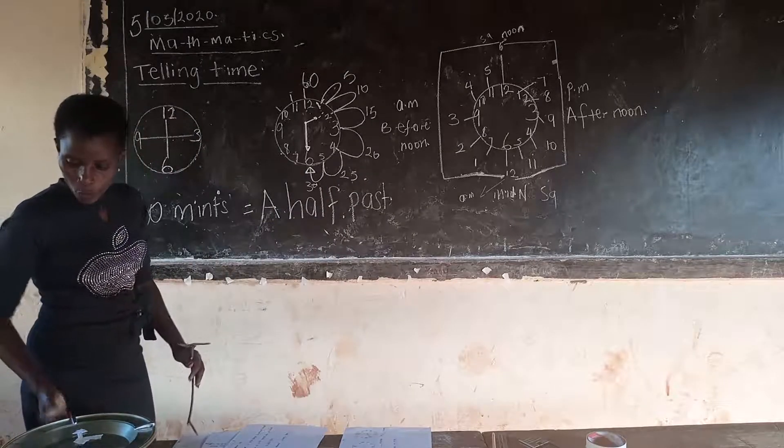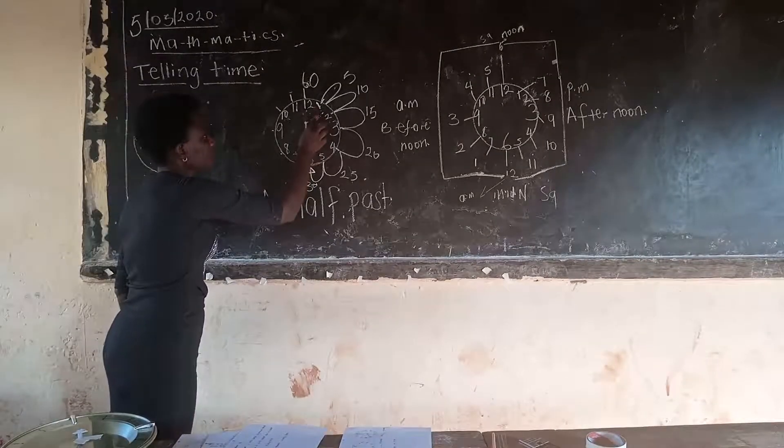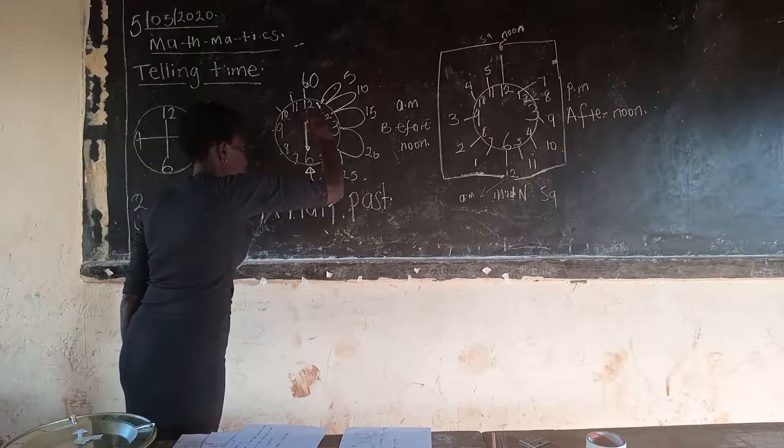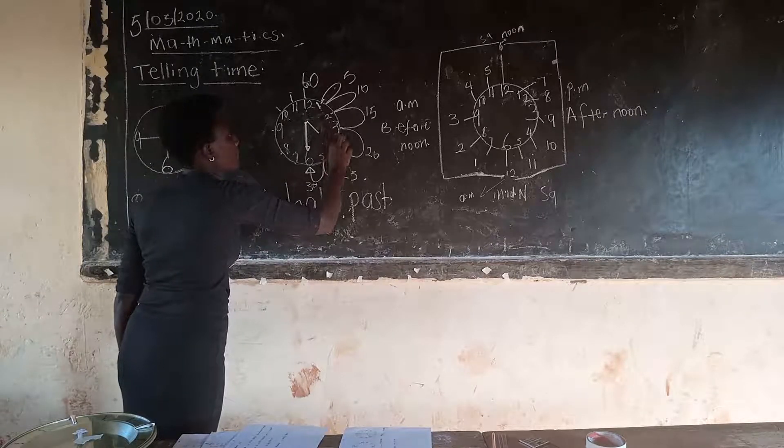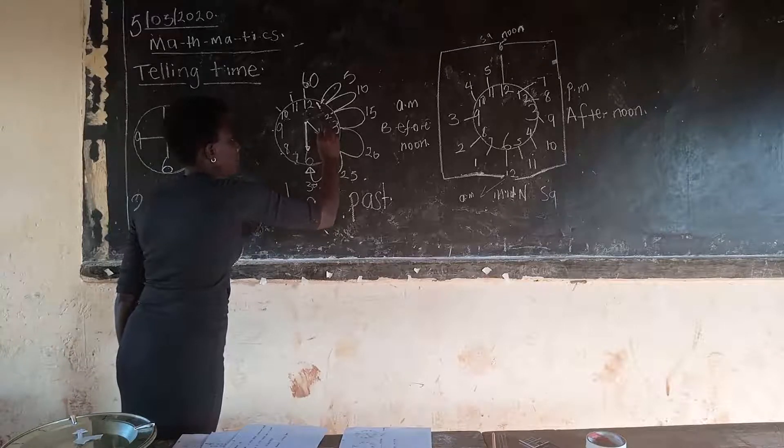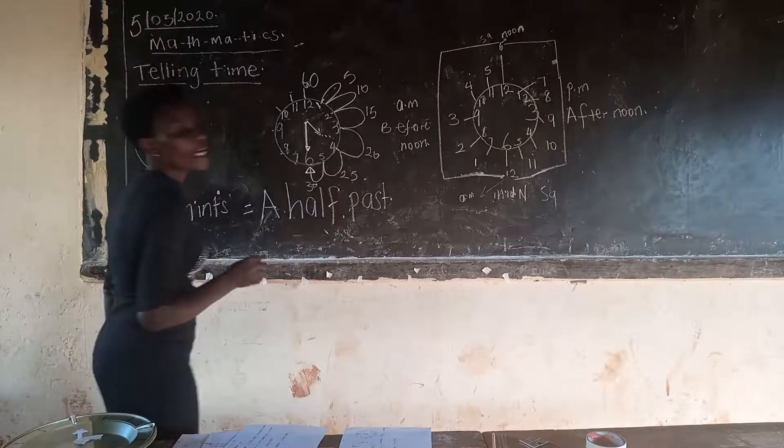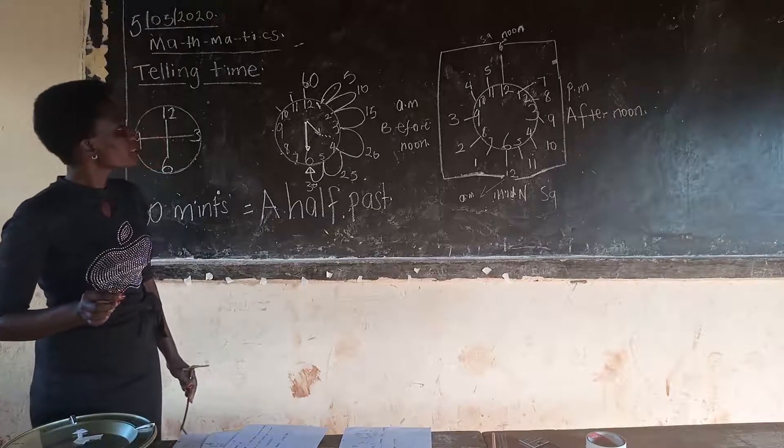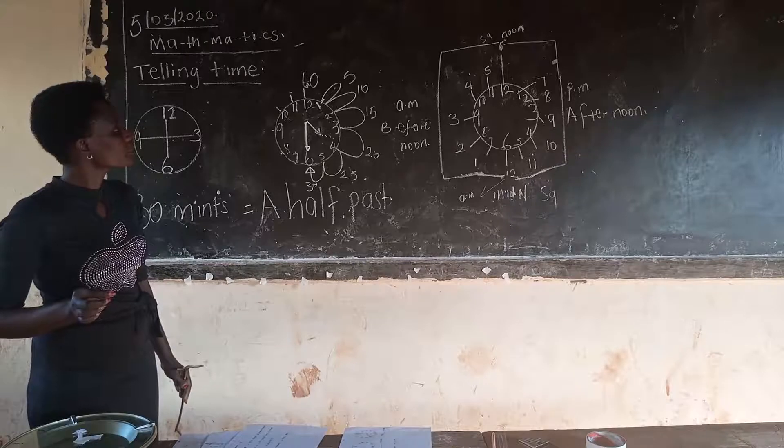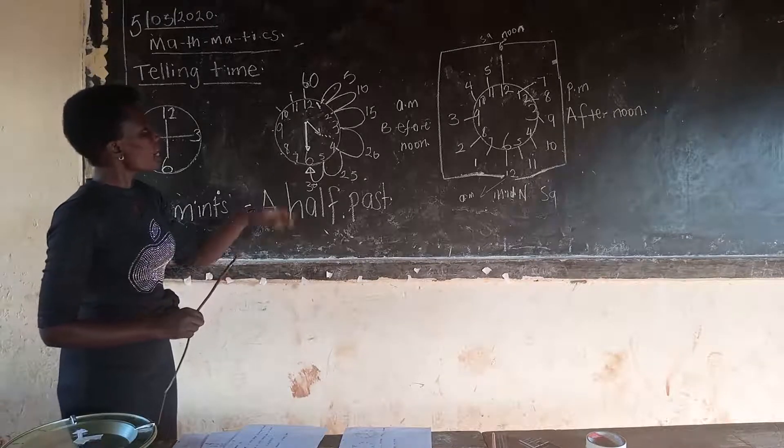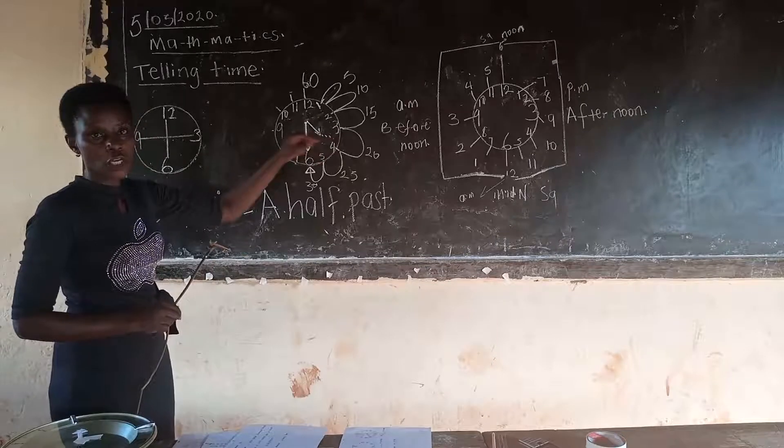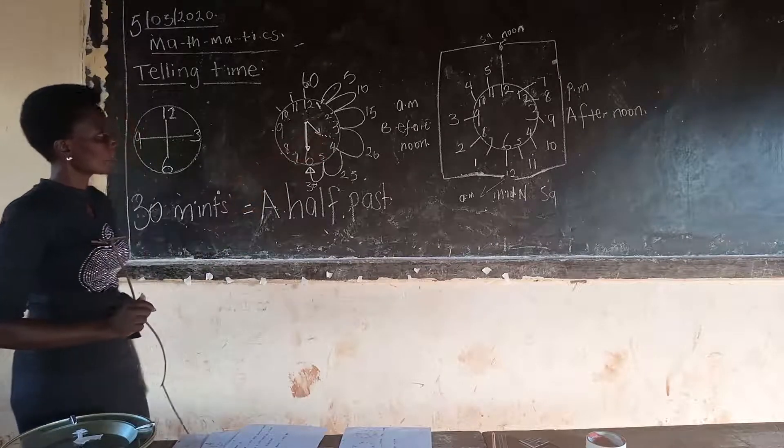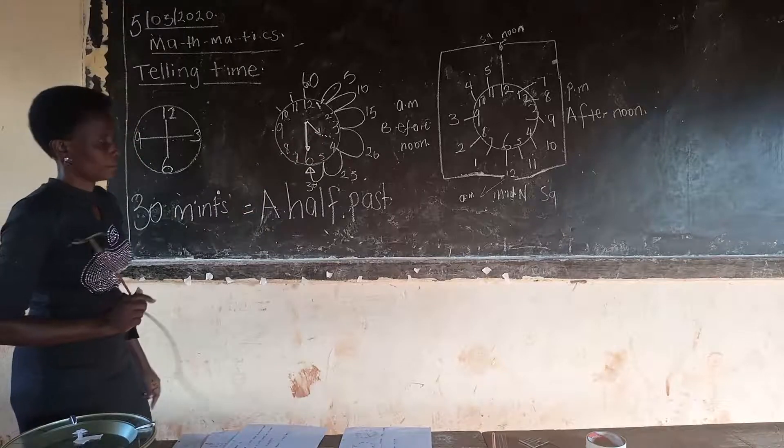Now, what if I grab and change the short hand and bring it here? Who can tell the time now? Who can tell the time now? It is half past 3 o'clock. It is half past 3 o'clock. Okay.